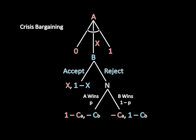And here's the game. A begins by demanding x of some utility both states desire, which is valued at one. B can either accept or reject that offer. If B accepts, A gets x and B gets the rest. If B rejects, the states fight a war.